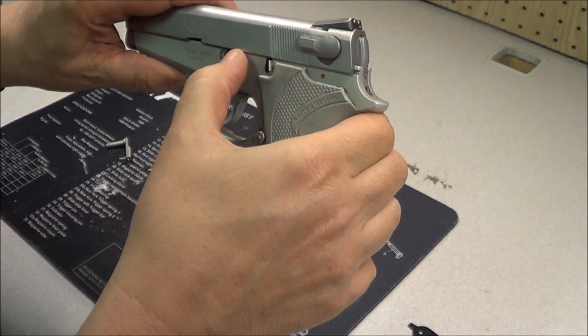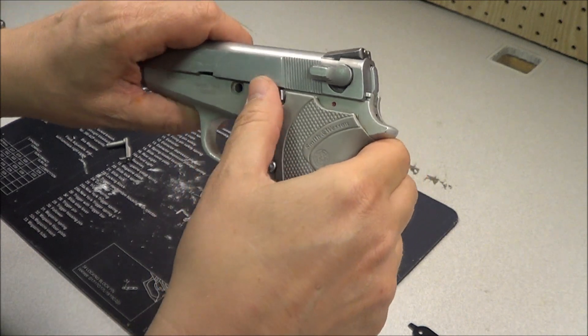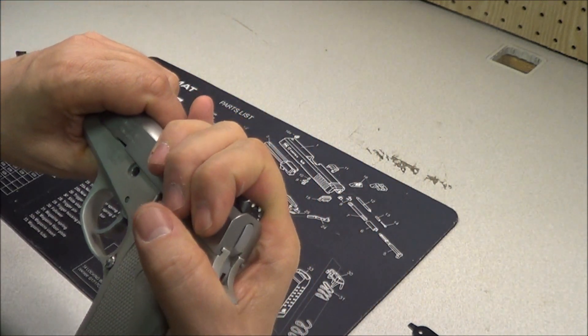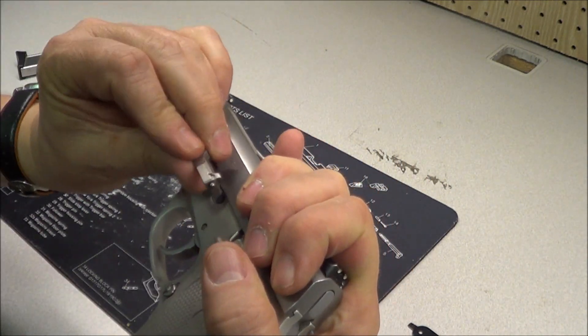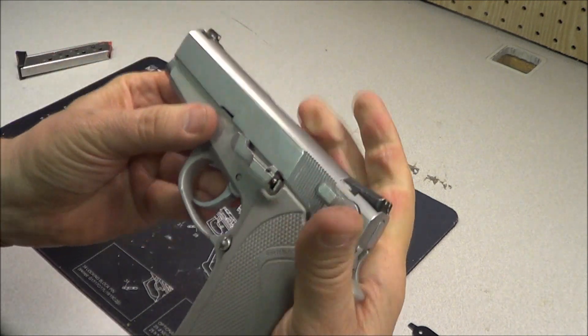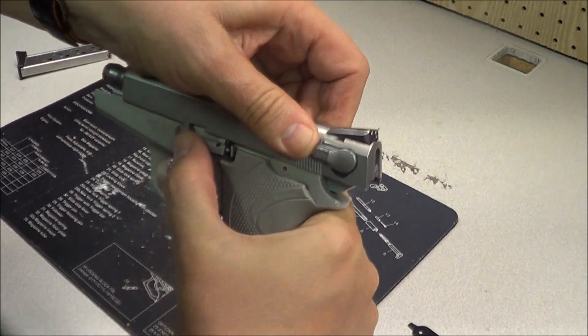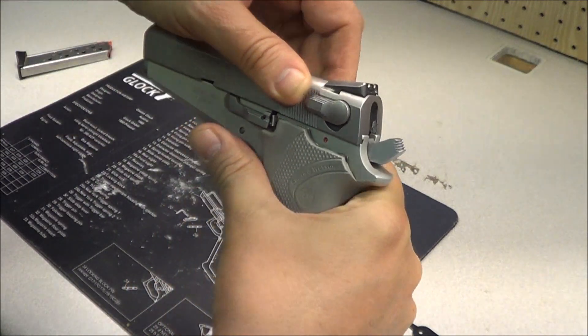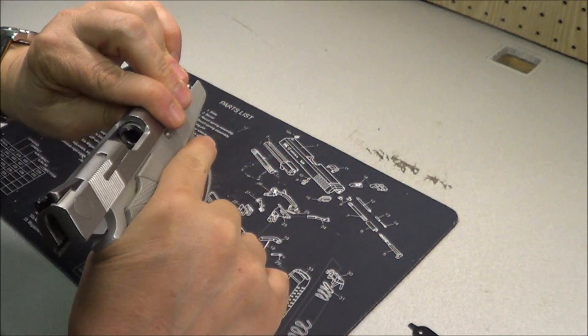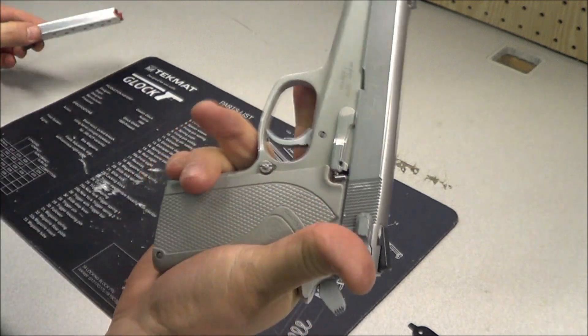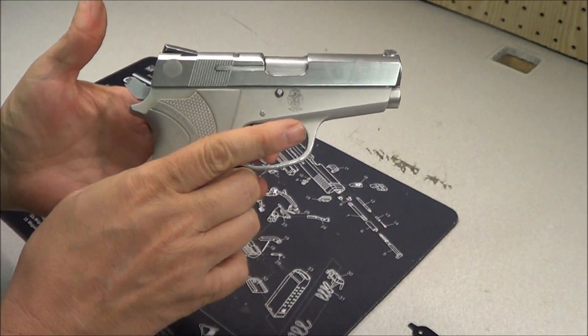And on this hole right here, you can see the barrel lugs right there. So you have to kind of pull back just a little bit to put the slide stop in. And it goes in just like that. Then you pull the slide all the way to the rear so this point lines up and push it in. Gun's empty.